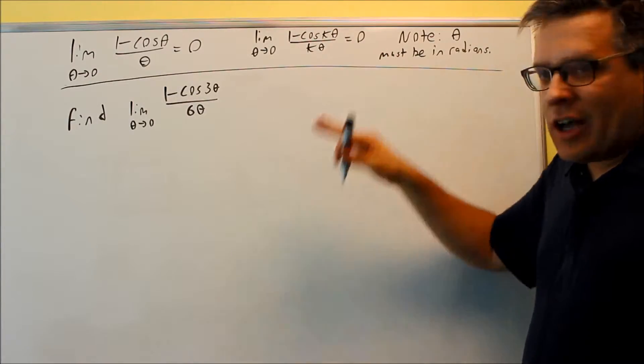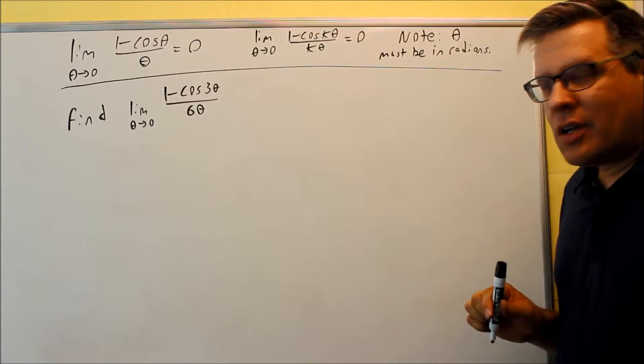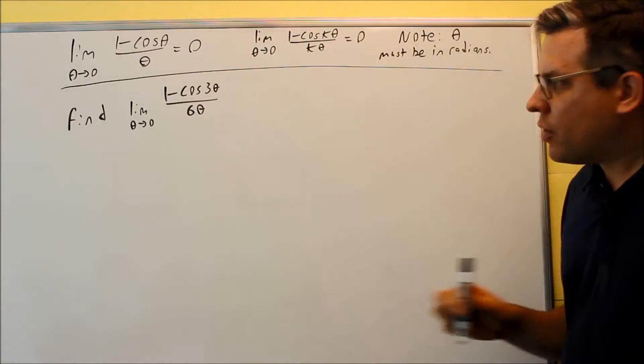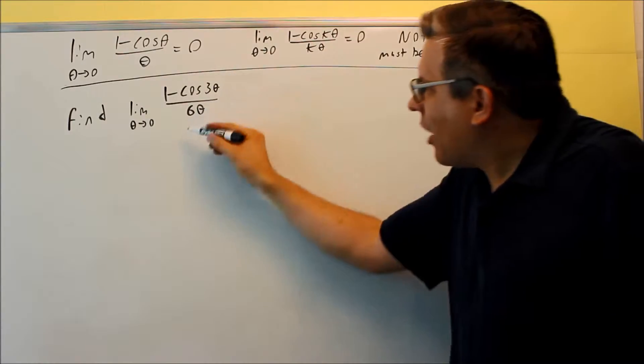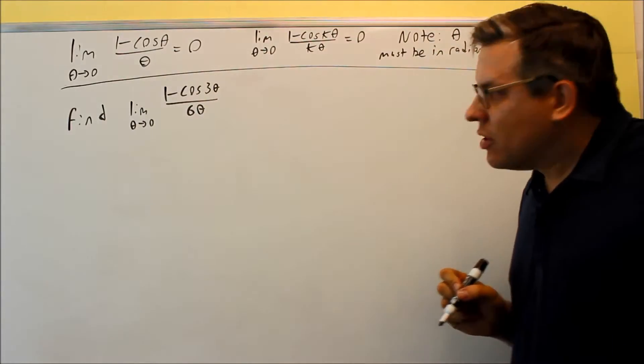So, we're going to apply that to this particular problem. Now for this problem, I can't just automatically put zero down because these do not match. You have to show algebraically how the top and bottom ones are going to match.